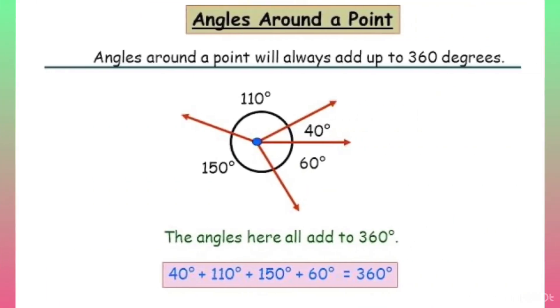Next is angles around a point. Angles around a point always add up to 360 degrees, meaning the sum of all angles around a point is 360 degrees.